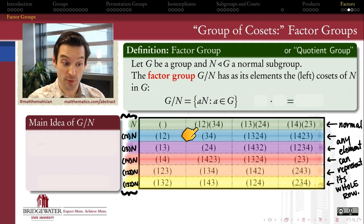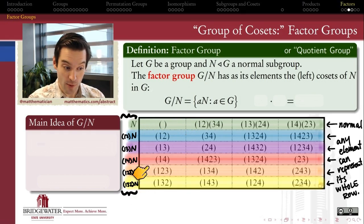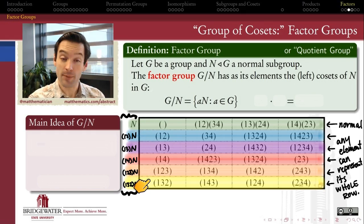So the elements in the factor group are the left cosets of N inside of G. So in this example, it's these six rows of this table, those are the elements of the factor group S4 mod N, where N is that first row, normal subgroup.